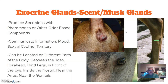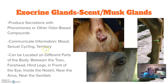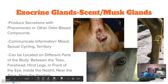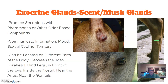Another set of exocrine glands are the scent or musk glands. These produce secretions with pheromones or other odor-based compounds, and represent a form of mammalian communication based on smell. Some things they can communicate include mood, sexual cycling to indicate readiness to breed, or defining territory. They can be located on different parts of the body — between the toes, on the forehead, on the hind legs, or in front of the eye. The depression in front of the eye shown here is a type of scent gland.